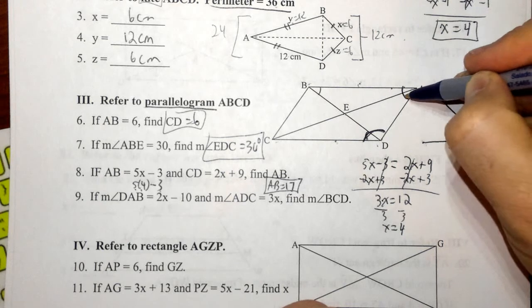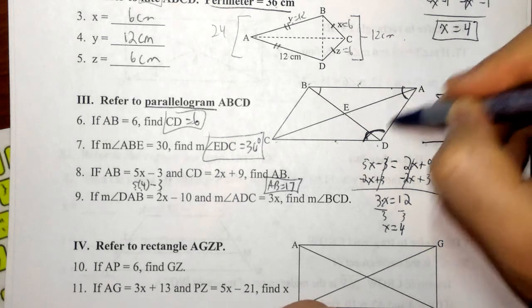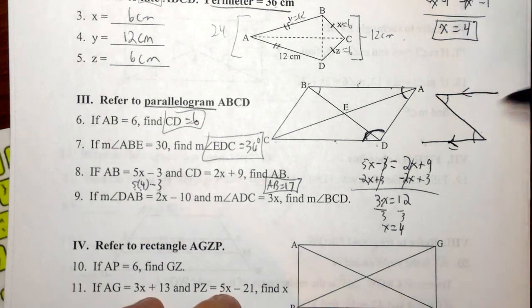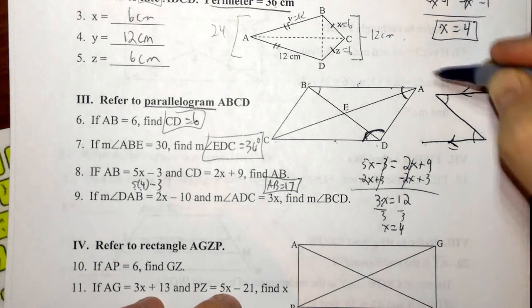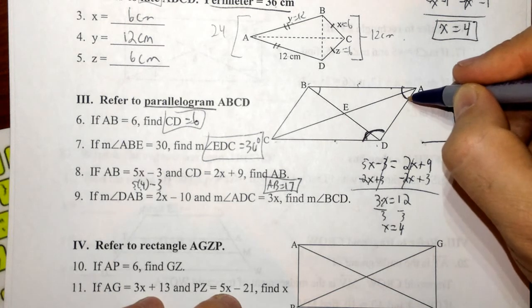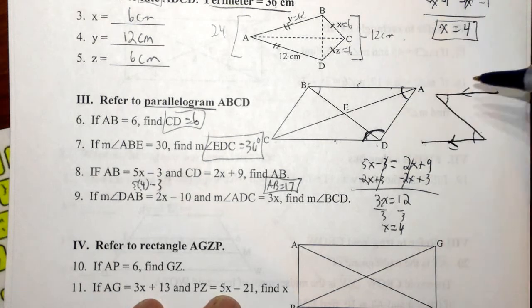equals 3x. Now I've got consecutive angles of a parallelogram, which means that they are supplementary. And again, if I looked at this thing here, these would end up being, as a transversal, consecutive interior angles, also making them supplementary.